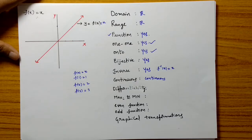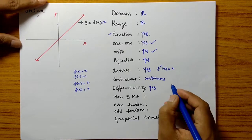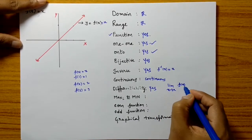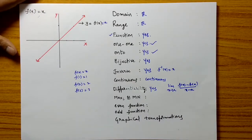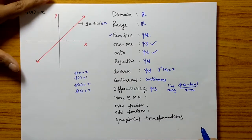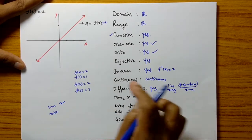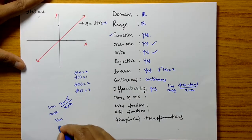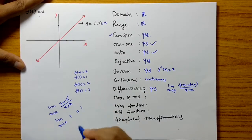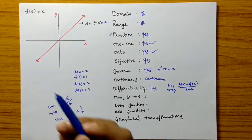Is it differentiable? Yes, it is a differentiable function, because every polynomial function is differentiable. Using the limit definition: limit as x tends to a of [f(x) minus f(a)] divided by [x minus a]. Here f(x) is x and f(a) is a, so the numerator and denominator both cancel, giving limit as x tends to a of 1, which equals 1. The limit exists, so it is differentiable and the derivative of x is 1.